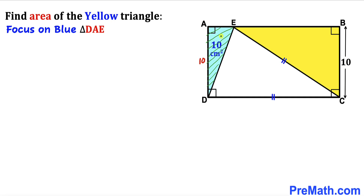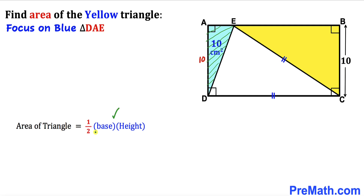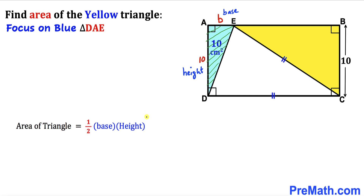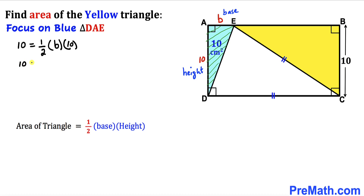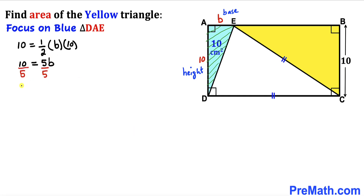Let's focus on the blue shaded triangle DAE and recall the area of a triangle formula: area equals half times base times height. In our case, area is 10 cm² and the height is 10 cm. Letting the base be B, we get: 10 = ½ × B × 10, which simplifies to 10 = 5B. Dividing both sides by 5 gives B = 2 cm.